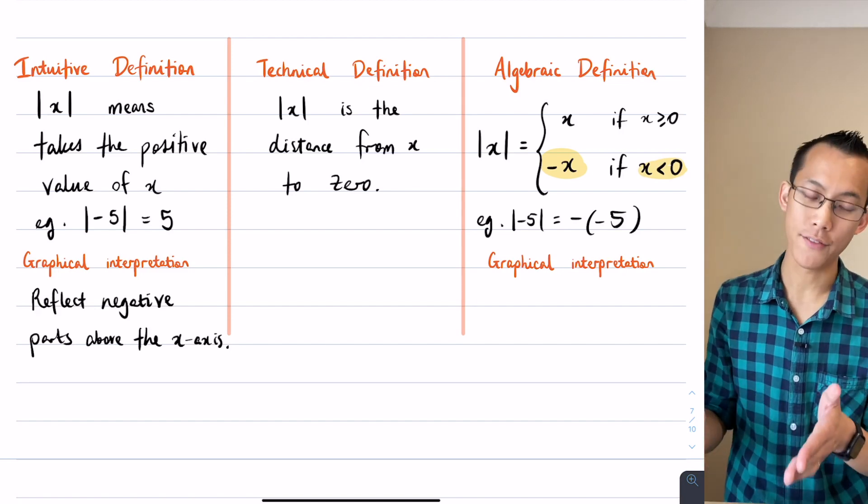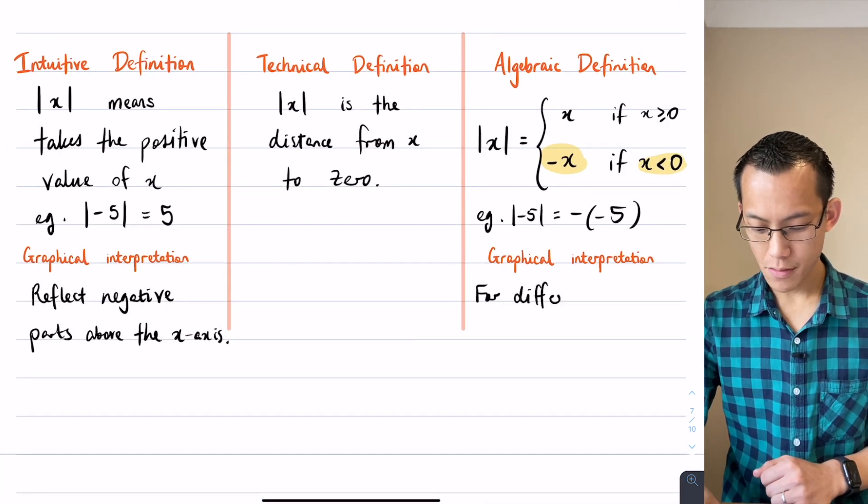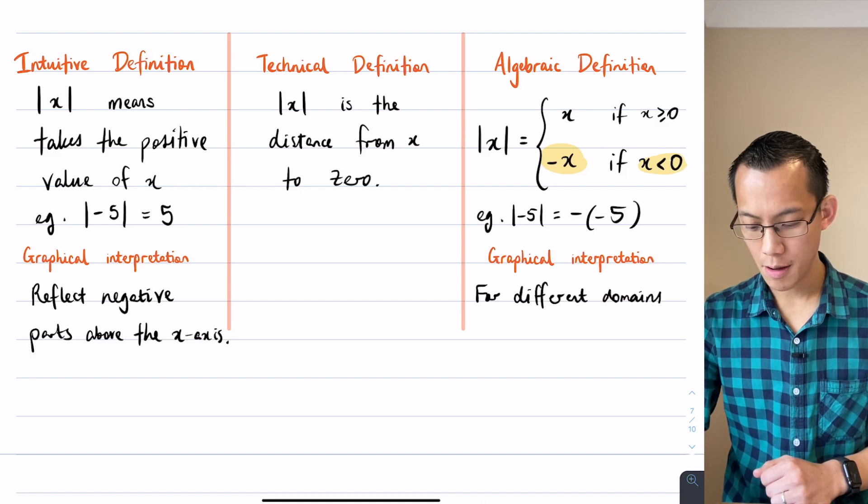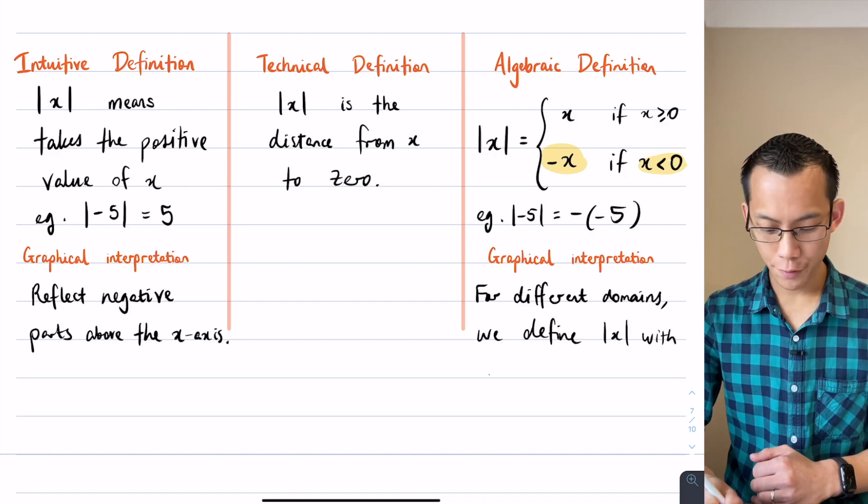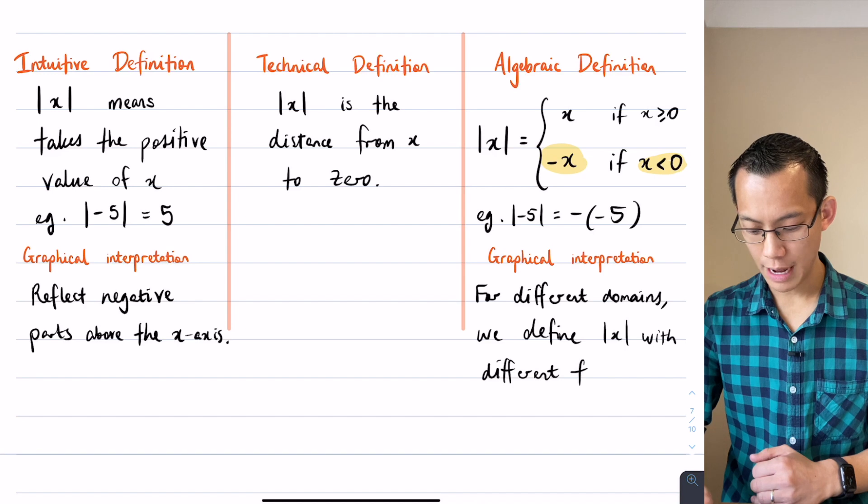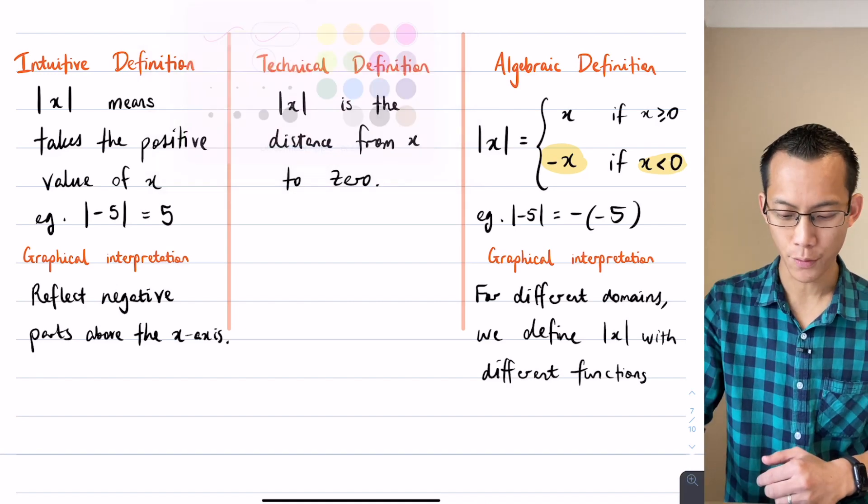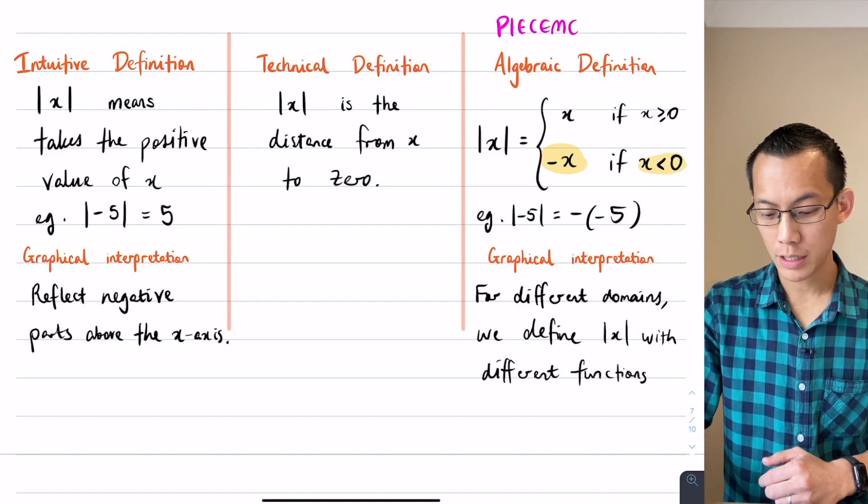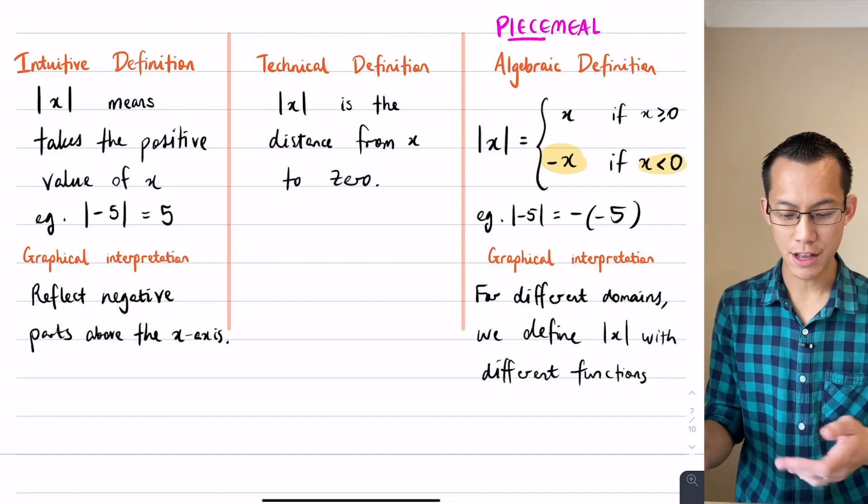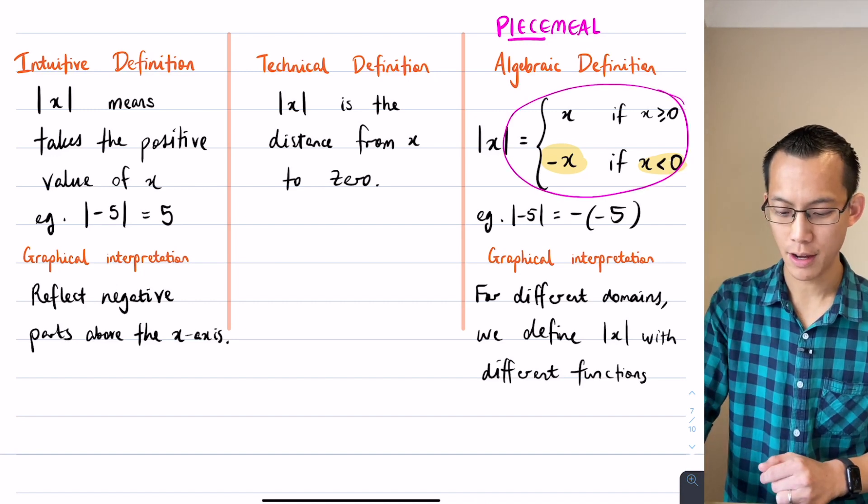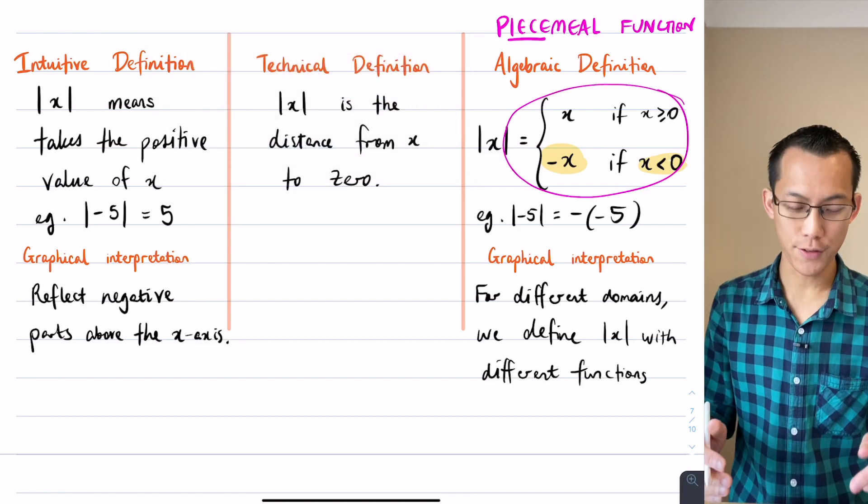When we look at the algebraic definition, even though you end up with the same result, this algebra tells us something very different. For different domains, the absolute value of x is defined by different graphs. We have a technical name for this. We call the absolute value and other functions like this a piecemeal function. That means for some parts of the domain, some pieces of the domain, we define the absolute value in one way, and then for other parts of the domain we just define it another way. This is a piecemeal function. Sometimes it behaves like this, other times it behaves like that.